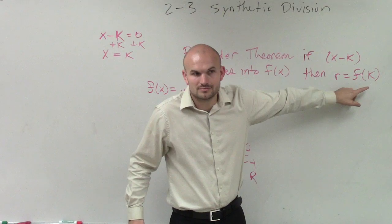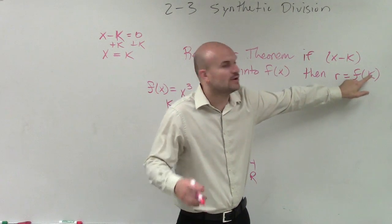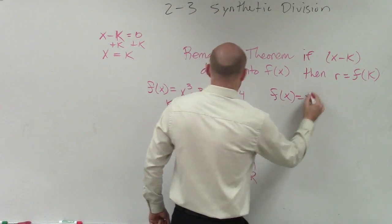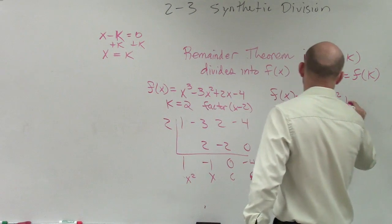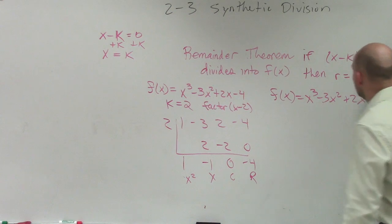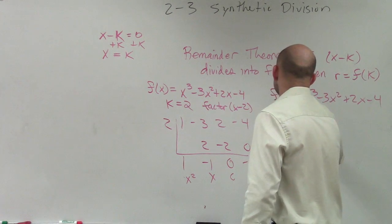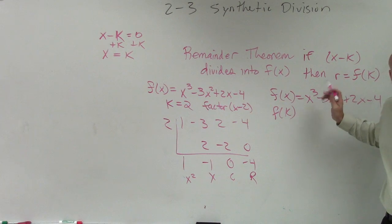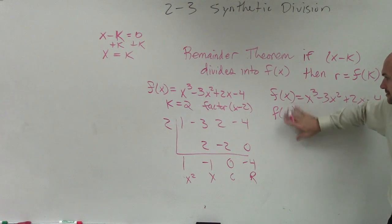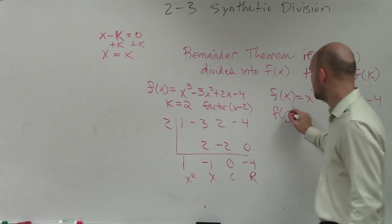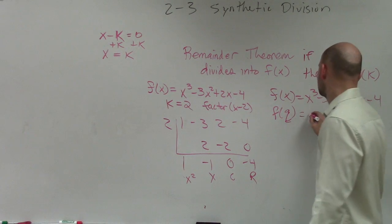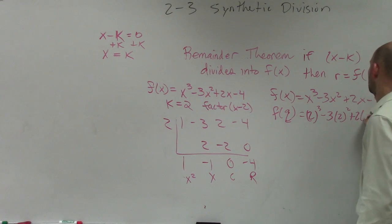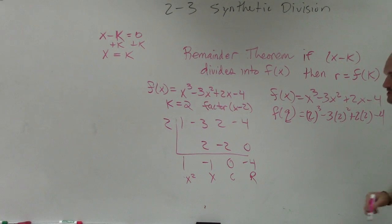So here I have f of k. What would I do with the k? Well, what would I do with the k, though? Here's my function. So I have f of x equals x cubed minus three x squared plus two x minus four. And if I wanted to find f of k, what would I do? Put the k in for x. However, do I know what k is in this problem? K is two. So what am I going to do with the two? Put it in for x.